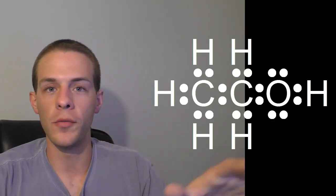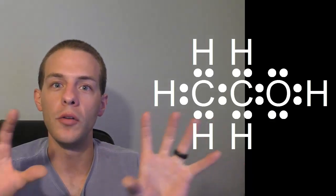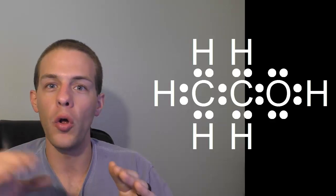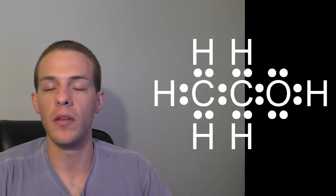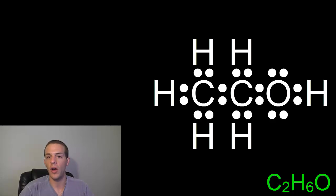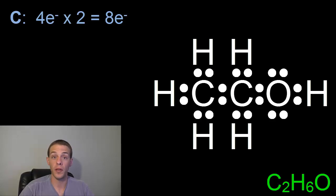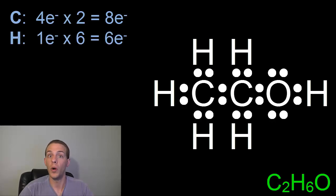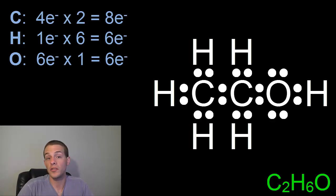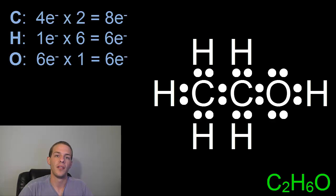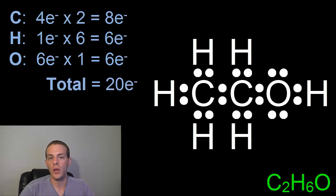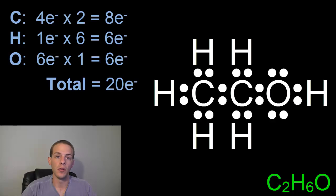Another important thing with regard to Lewis dot structures is that the total number of valence electrons in the structure should match the total for all the individual atoms. The chemical formula for ethanol is C2H6O. Two carbons each have four valence electrons for a total of eight; six hydrogens each have one valence electron for a total of six; and one oxygen has six valence electrons. Adding eight plus six plus six gives 20 valence electrons total, and you can count the dots in the structure to confirm there are indeed 20 valence electrons.